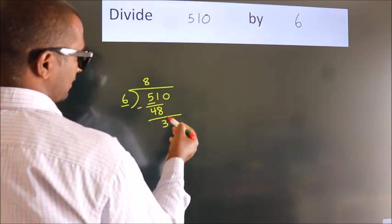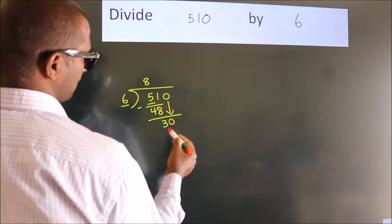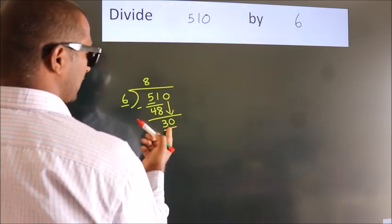After this, bring down the beside number. So, 0 down. So, 30. When do we get 30?